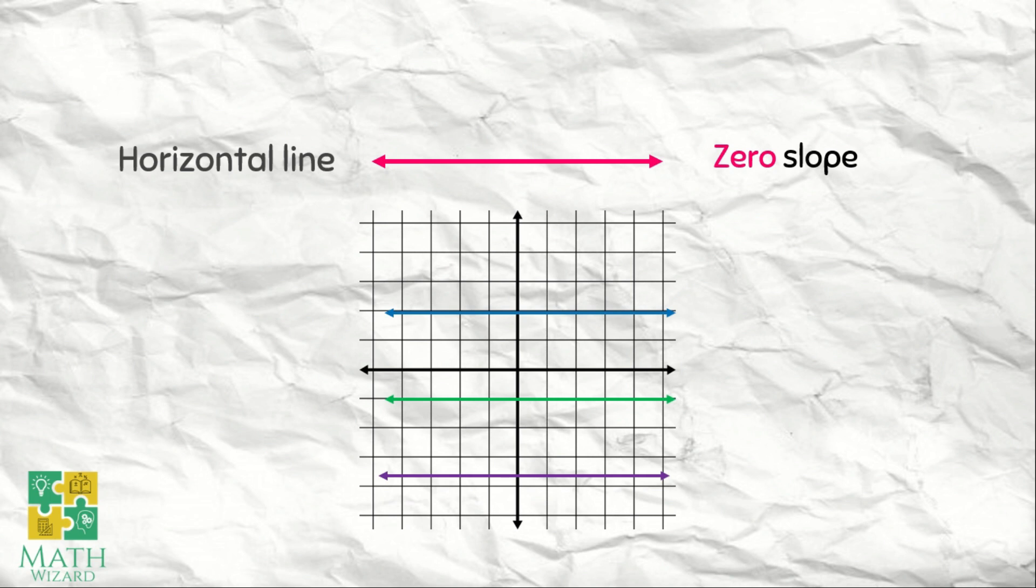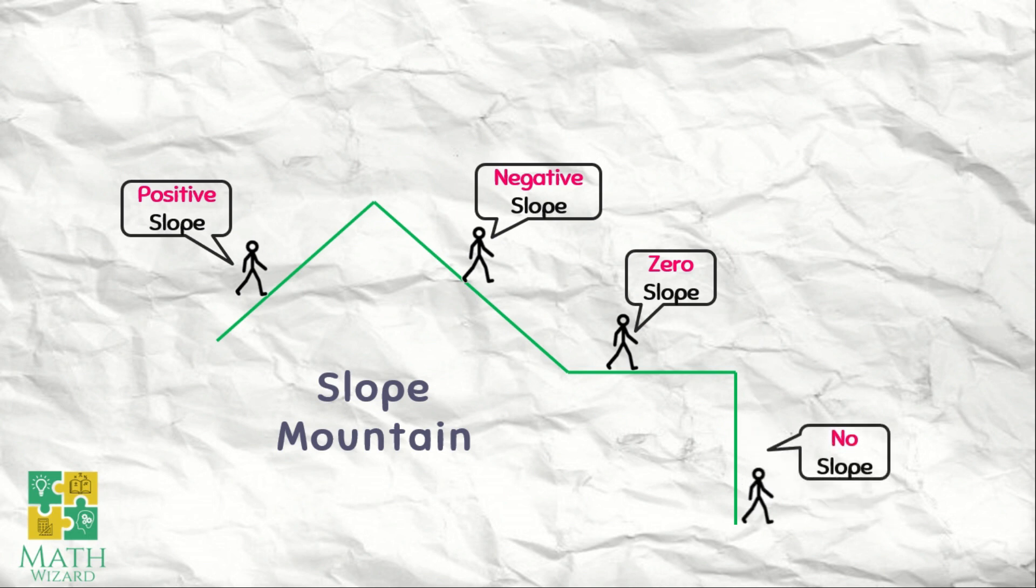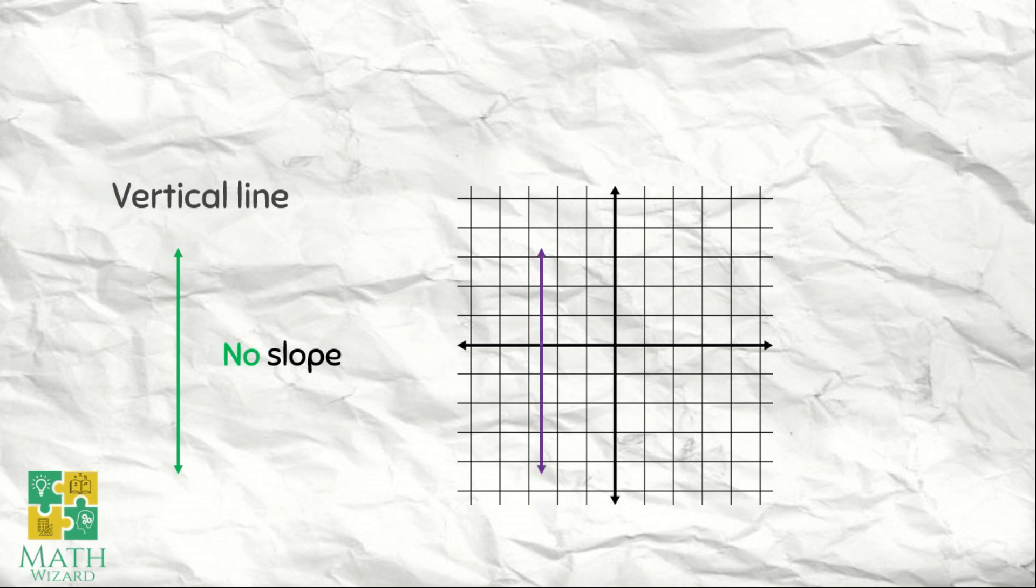But if it's a vertical line, there is no slope. In vertical line, no slope. Example for this one, this one, and the other one. So if it's a vertical line, there is no slope.